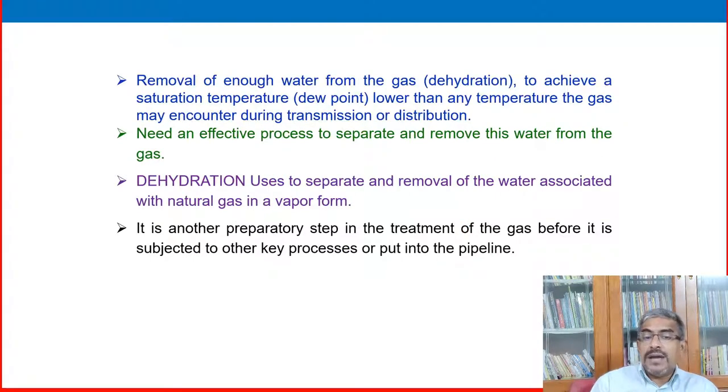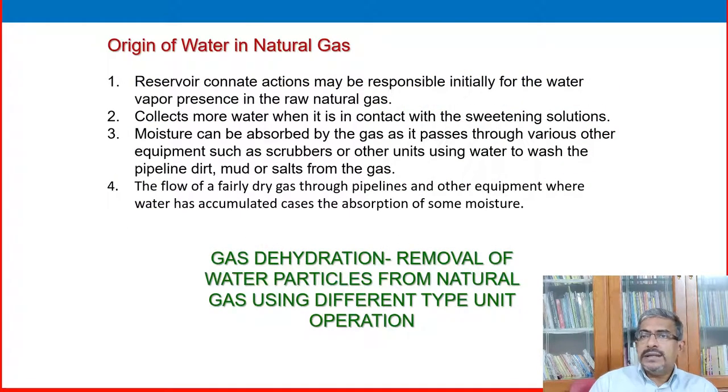Chemical injection, or we can reduce the line pressure, and we can increase temperature. So temperature and pressure have a very important role in preventing hydrate formation in gas transportation lines. Another method: removal of enough water from gas. This is called dehydration, removal of moisture or excess moisture from gas to achieve a saturation temperature, that is dew point, lower than any temperature the gas may encounter during transmission or distribution.